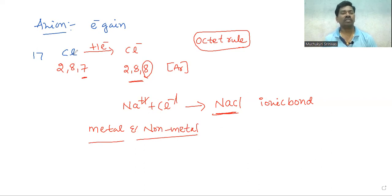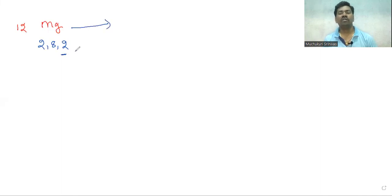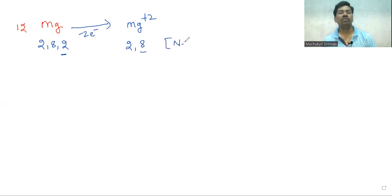Another example is magnesium oxide. Magnesium has atomic number 12, so its electronic configuration is 2, 8, 2. It has two electrons in its valence shell. Magnesium loses these two electrons, becoming Mg plus two. As a result, it achieves the electronic configuration 2, 8 — the neon electronic configuration — making Mg plus two most stable.